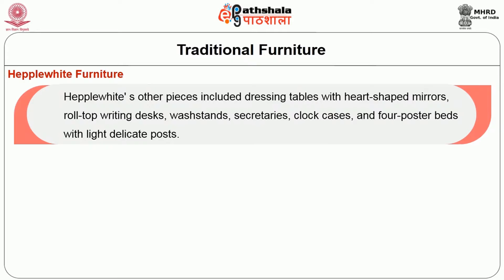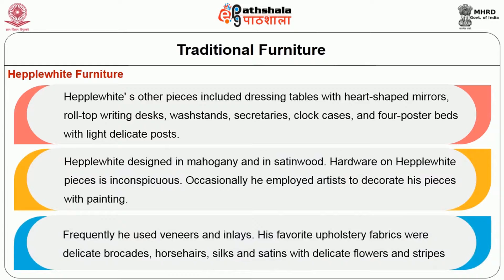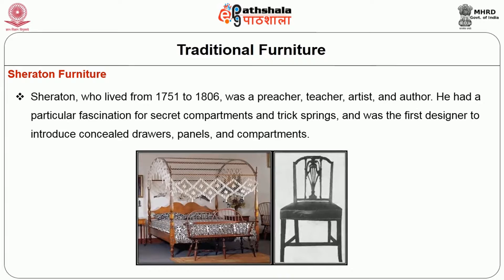Heppelwhite's other pieces included dressing tables with heart-shaped mirrors, roll top writing desks, washstands, secretaries, clock cases, and four-postered beds with light delicate posts. Heppelwhite designed in mahogany and in satinwood. Hardware on Heppelwhite pieces is inconspicuous. Occasionally he employed artists to decorate his pieces with painting; frequently he used veneers and inlays. His favourite upholstery fabrics were delicate brocades, horsehair, silks, and satins with delicate flowers and stripes.